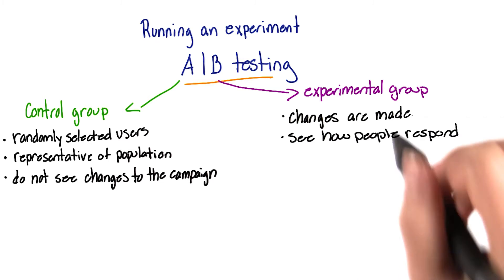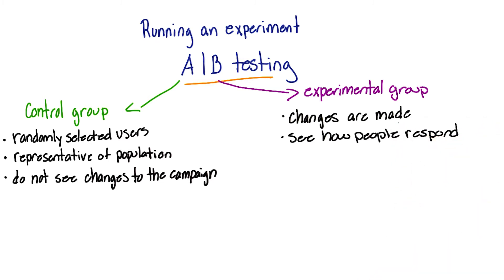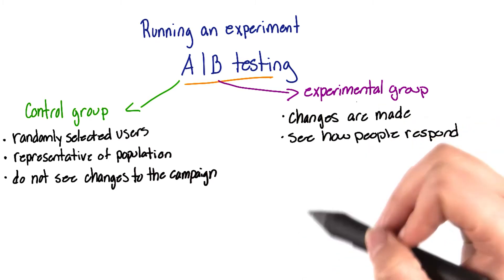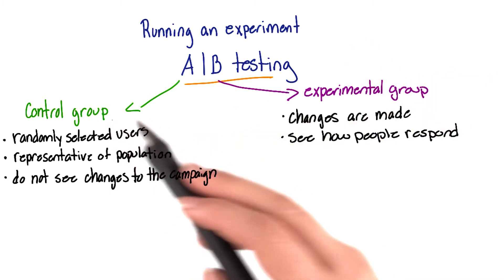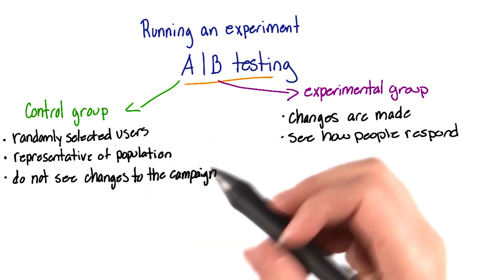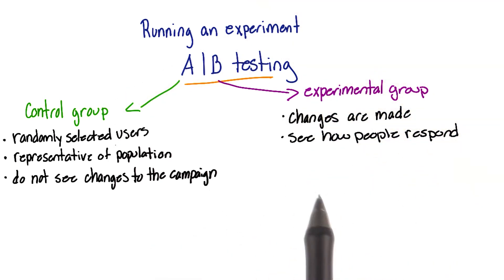Only the people in the experimental group will see these changes. So the people in the experimental group will see the sign-up button at the top of the page, and the people in the control group won't see a change in the location of the sign-up button. This way you can see how the people in the two different groups perform and which button placement would result in more sign-ups.